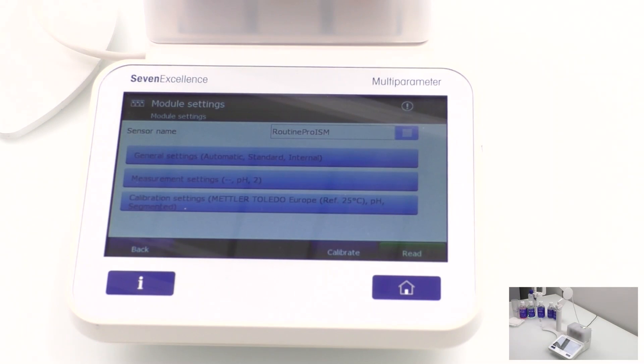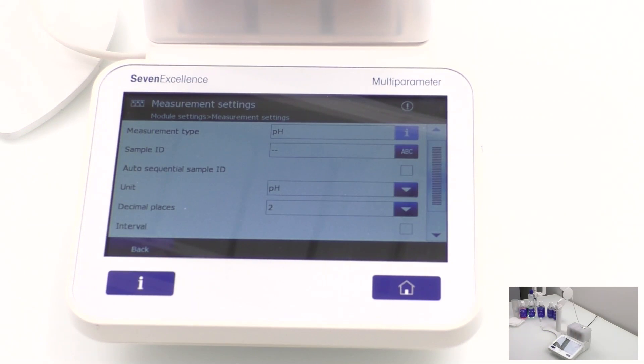Next, select Measurement Settings and keep pH for the measurement type, and the unit and decimal places set to 2. Then, select back.